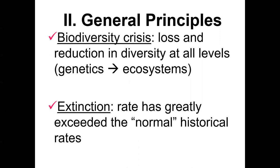The most extreme loss is extinction of a species. Extinction is a natural process and it occurs continuously. However, we're in a crisis because the number of species going extinct per unit of time has greatly exceeded the normal rate. Normally extinction occurs at a very slow pace and the number of species that disappear is equal to or slightly fewer than those that appear. Some conservation biologists have compared this to a geological mass extinction event where thousands of species have been lost in a relatively short period of time.